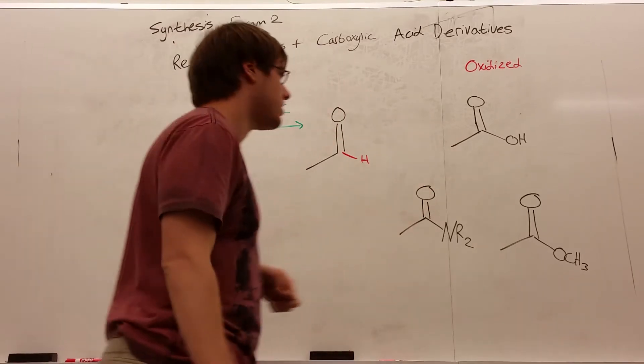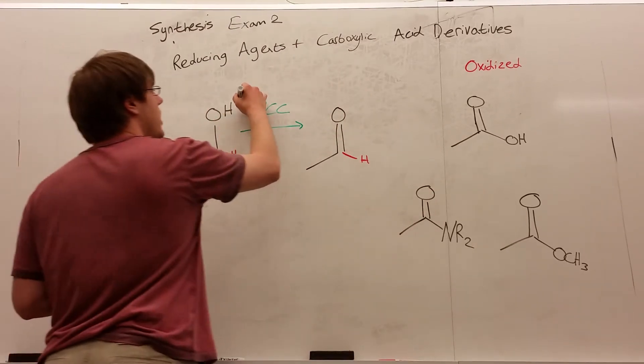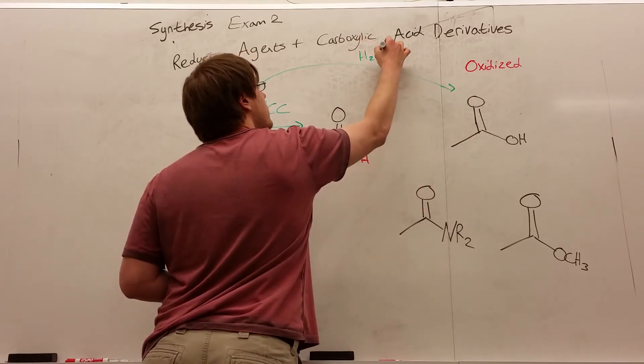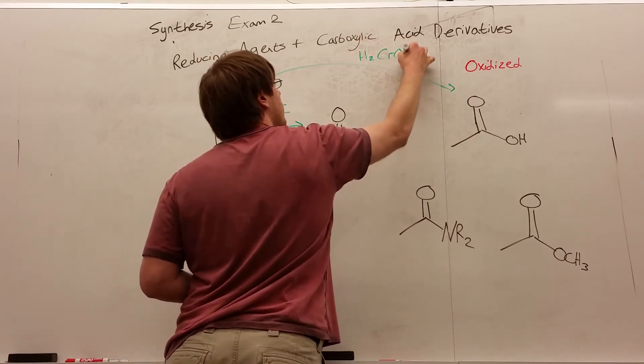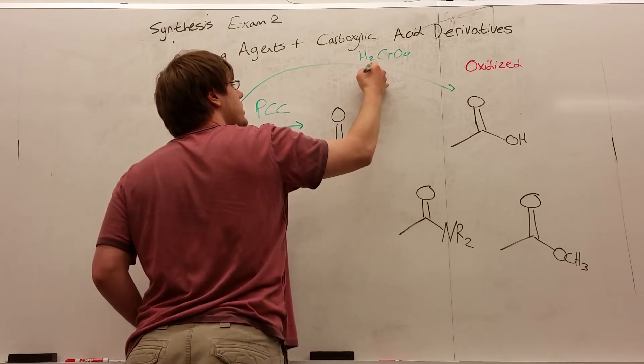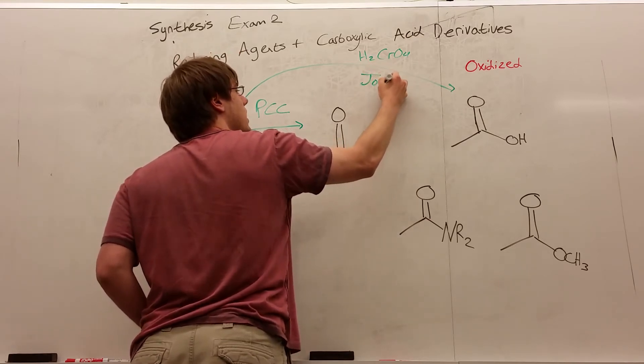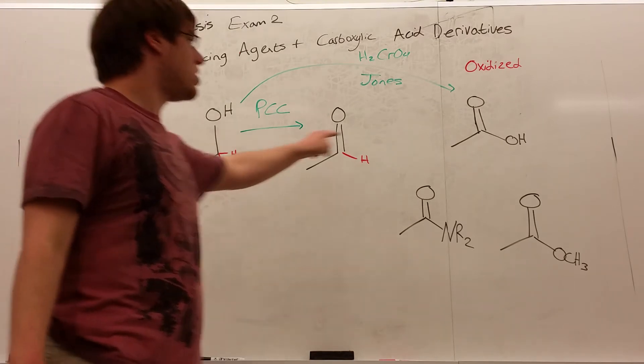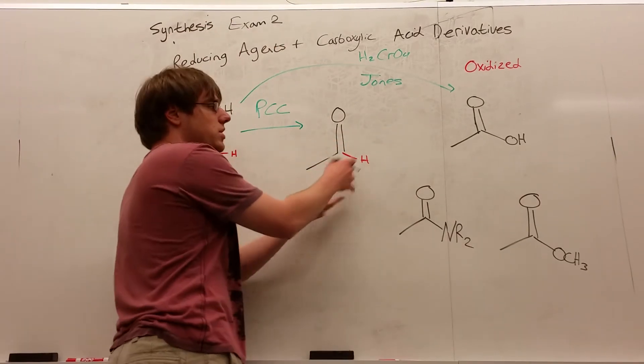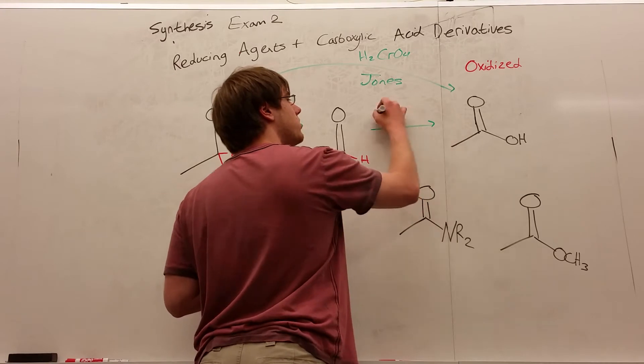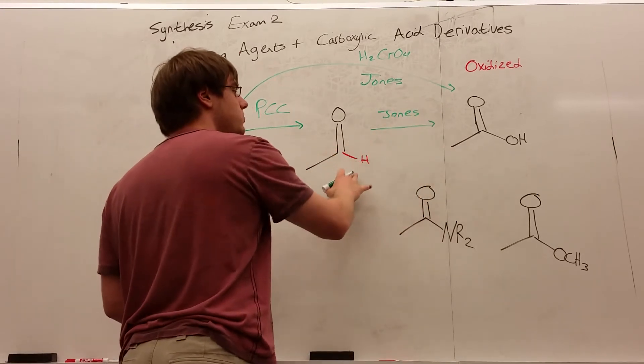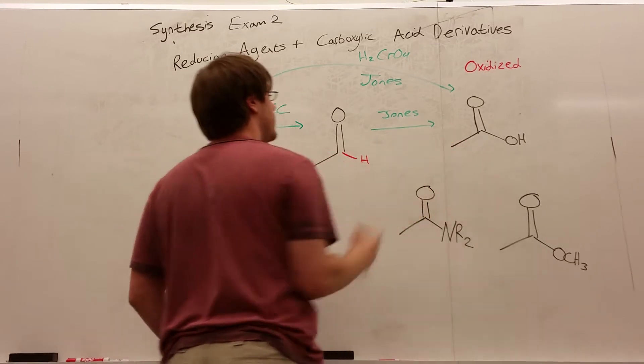But PCC is only strong enough to take an OH to a carbonyl. It can't take it all the way to a carboxylic acid. What is strong enough to do that is Jones reagent, H2CrO4. And you will see that sometimes just written as J-O-N-E-S, Jones. And so that's strong enough to take an OH to a carboxylic acid. And if you start with an aldehyde, it will also work. So Jones would do this, but you cannot use PCC and turn this into a carboxylic acid.